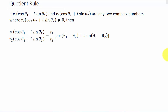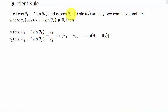In this video we're going to look at finding the quotient of complex numbers written in trigonometric form. So let's suppose we have two complex numbers, both of them in trigonometric form, and R sub 2 times cosine theta 2 plus i sine theta 2 is not equal to 0, because that would give us a 0 in the denominator.